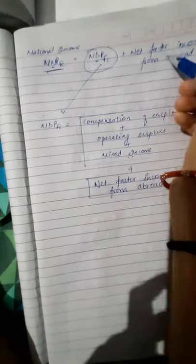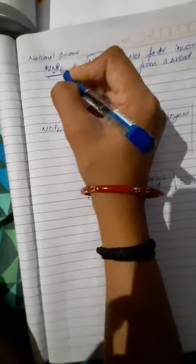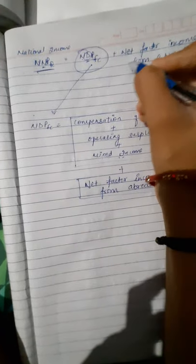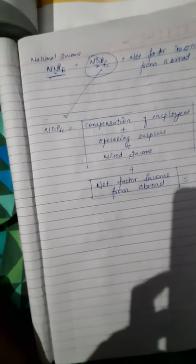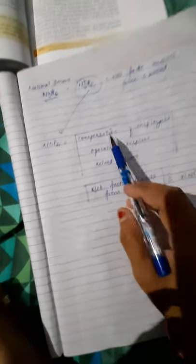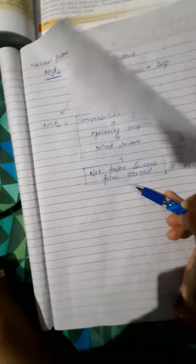We have NDPFC — Net Domestic Product at Factor Cost — which is Domestic Income. When we add Net Factor Income from Abroad to NDPFC, we get NNPFC, which is National Income. So: NDPFC = Compensation of Employees + Operating Surplus + Mixed Income. Adding Net Factor Income from Abroad gives us NNPFC, that is National Income.